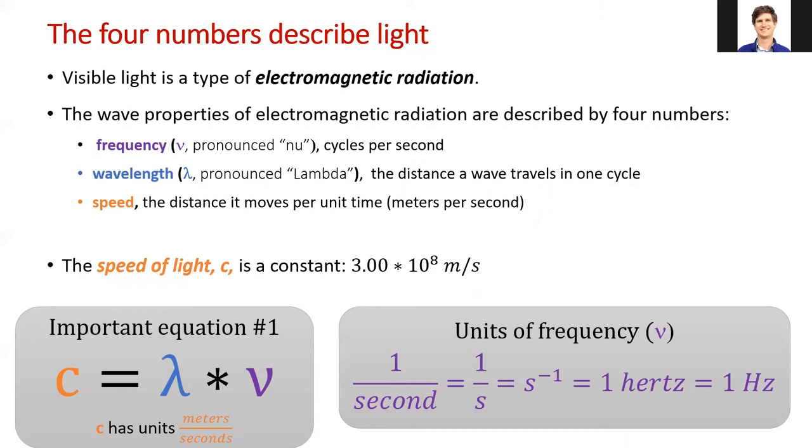And this leads us to our first important equation for this chapter. If we multiply frequency by wavelength, we get speed. Since the speed of light is a constant, we can use this equation to calculate frequency from wavelength and wavelength from frequency.